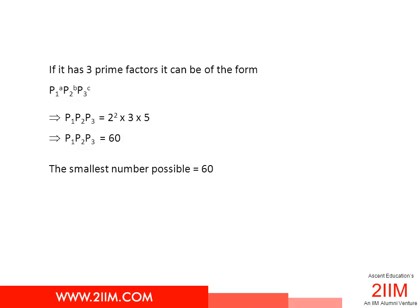So if you have a number which is 2² × 3 × 5, then that number will have exactly 12 factors. Multiplying this we get 60. 60 is the smallest number that has exactly 12 factors, not 12 prime factors.